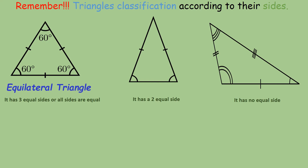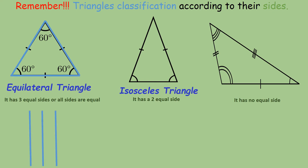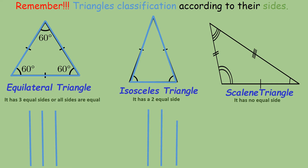These are the things to remember when we classify triangles according to their sides. An equilateral triangle has three equal sides, or all sides are equal. An isosceles triangle has two equal sides. And a scalene triangle has no equal sides.